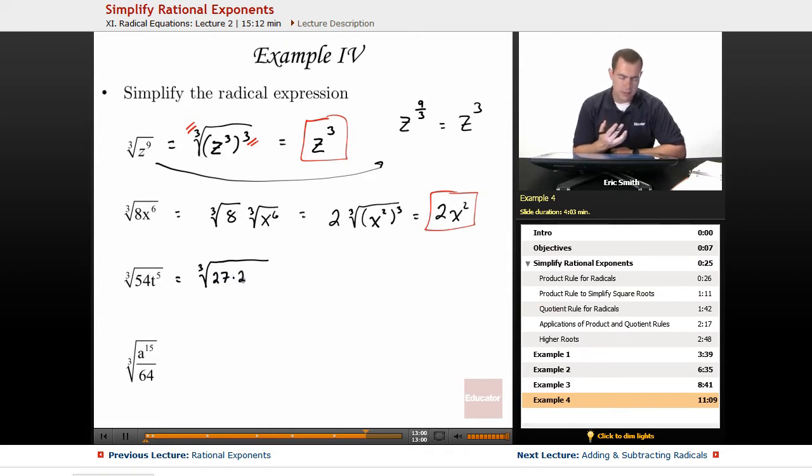And then what cubic numbers could I grab from t to the fifth? That's like t cubed and t squared. Notice here I'm really thinking of my product rule for exponents, how I'd have to add those exponents together in order to get five. I've split them up in just this way, so that I would have one of them that is cubed.